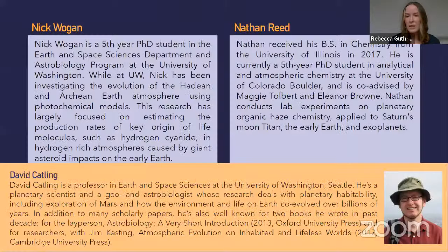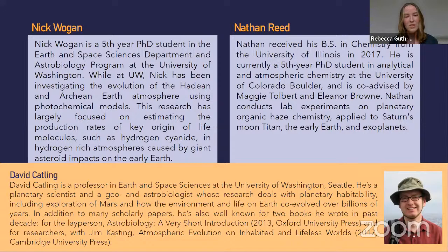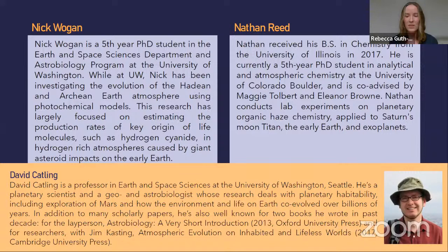David Catling is a professor in Earth and Space Sciences at the University of Washington, Seattle. He's a planetary scientist and geo- and astrobiologist whose research deals with planetary habitability, including exploration of Mars and how the environment and life on Earth co-evolved over billions of years. He is also well known for two books: Astrobiology: A Very Short Introduction, and with Jim Kasting, Atmospheric Evolution on Inhabited and Lifeless Worlds.